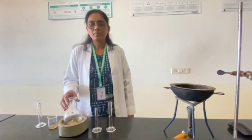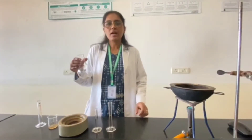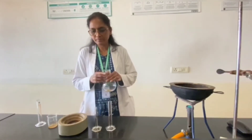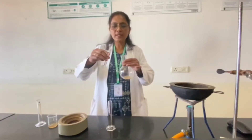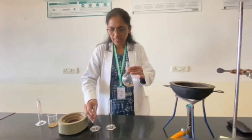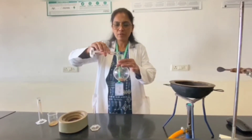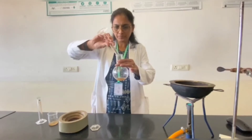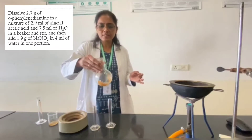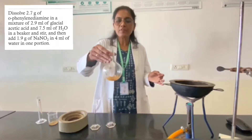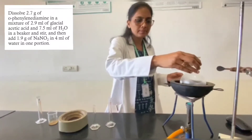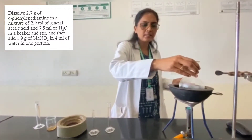Let's begin with the procedure. In the RBF, we are taking 2.7 grams of o-phenylenediamine. I am adding 2.9 ml of glacial acetic acid and 7.5 ml of water, and I am going to stir it for 10 to 15 minutes. If it is not dissolving, I am just going to warm it on a water bath until it dissolves completely.